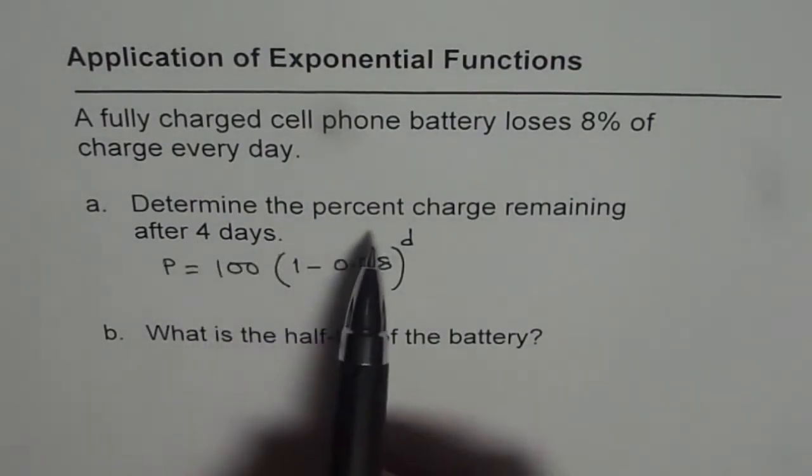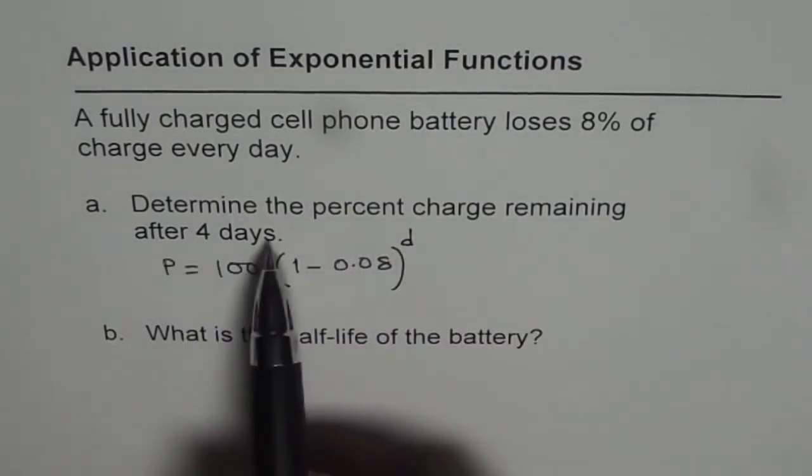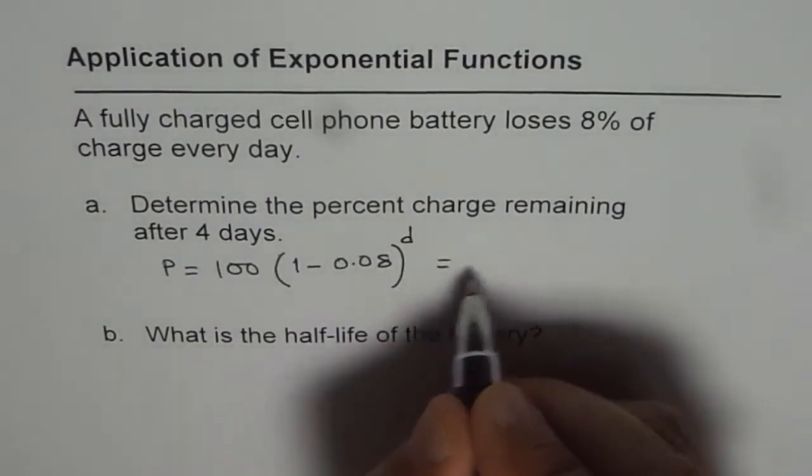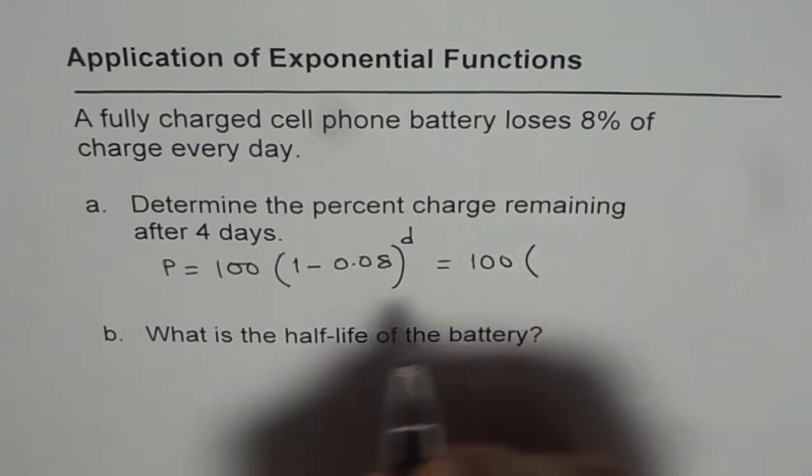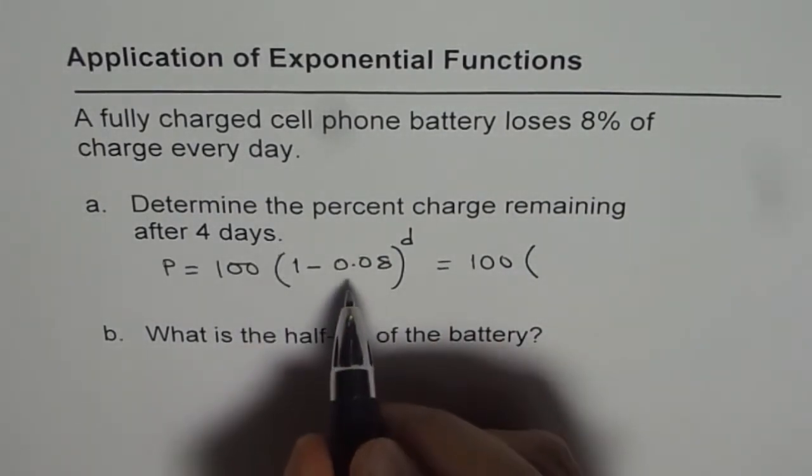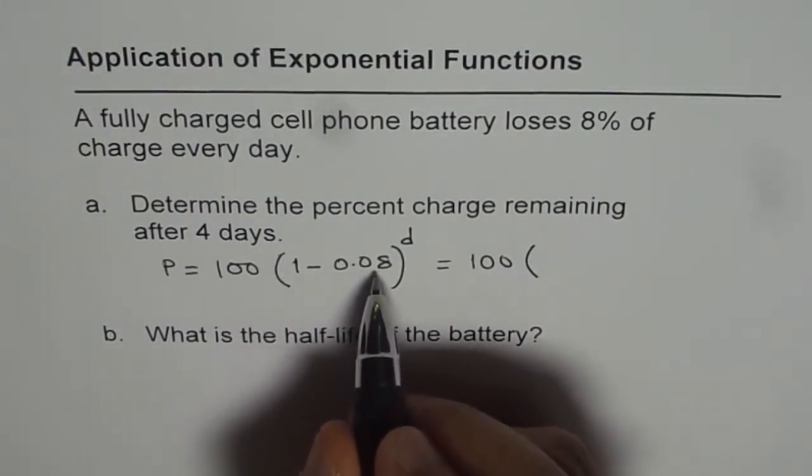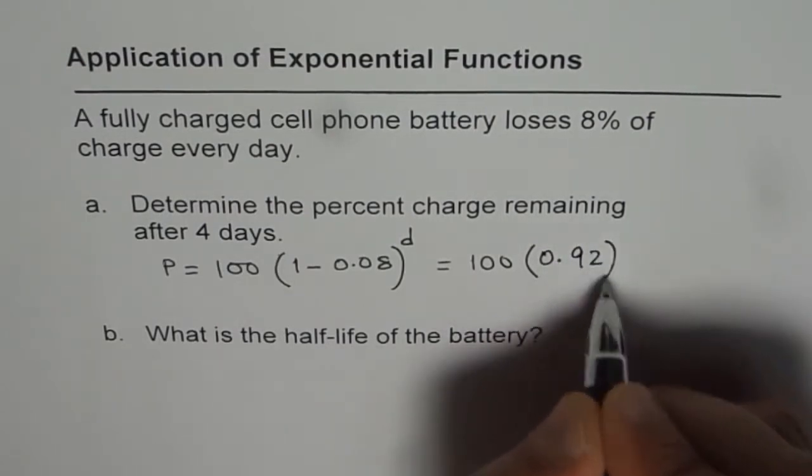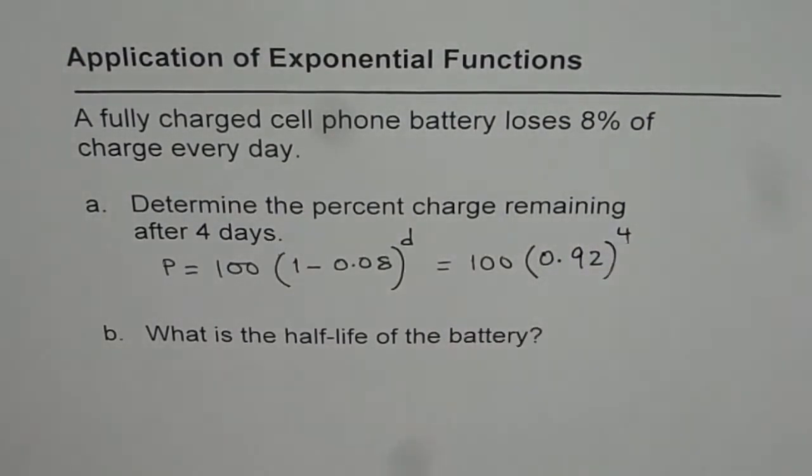To find the percent charge remaining after 4 days, we need to put D as 4 and calculate. We get 100 times 1 minus 0.08, gives us 0.92 to the power of 4. Using calculator, we can calculate this out. It is 0.92 to the power of 4 times 100.